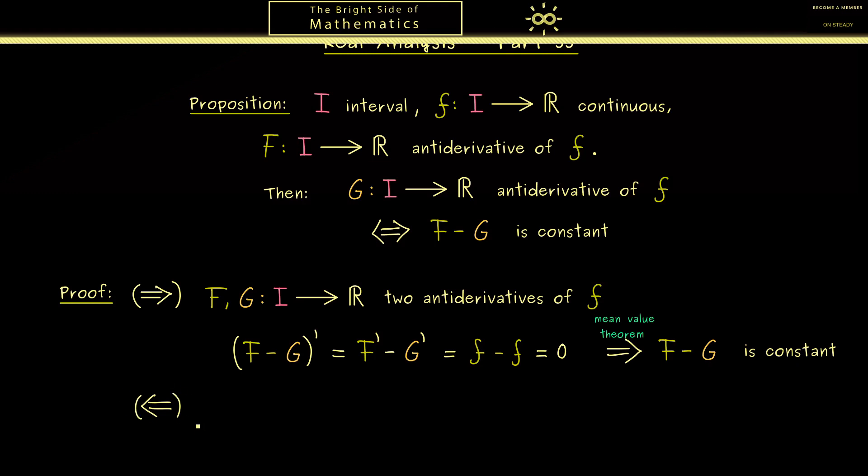Which means now we assume that the difference here is constant. We can concretize this by saying that we have a constant number c and this function is equal to this constant. So F(x) minus G(x) is equal to a number c. And of course, without writing down, this holds for every x in I.